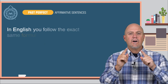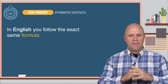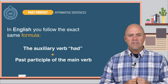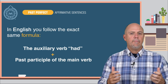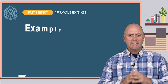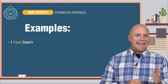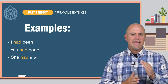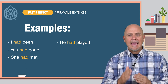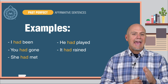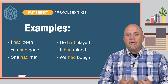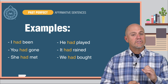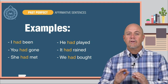In English, you follow the exact same formula: the auxiliary verb had plus the past participle of the main verb. Here are some examples: I had been. You had gone. She had met. He had played. It had rained. We had bought. Here are a few rules to help you understand and use the past perfect correctly.